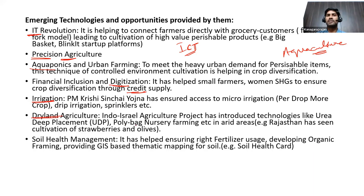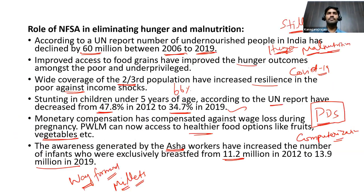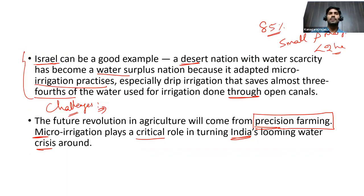Dryland agriculture technologies are important because water scarcity severely limits crop diversification in rainfed areas. Soil health management through precision agriculture — correct fertilizer use, organic farming, natural farming, and soil health card schemes — helps improve soil health and promote crop diversification. These emerging technologies promote diversification by consuming fewer resources and inputs.